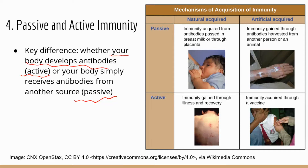Here are some examples of passive immunity where you acquire antibodies from another source. If you're a baby drinking breast milk, that milk has antibodies made by the mother's body. Or if you're a fetus growing in the uterus, the mother's antibodies in her blood can be transported to the baby's blood through blood exchange.